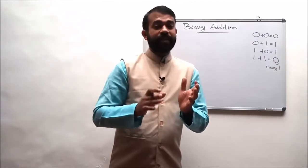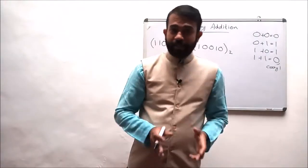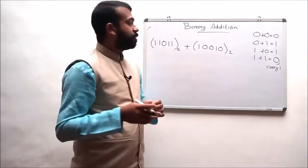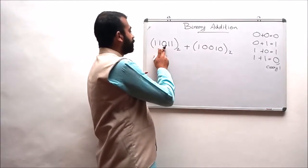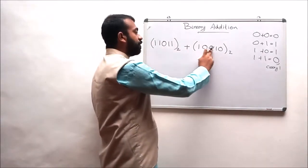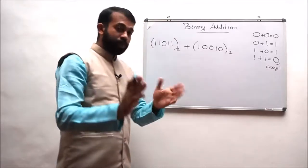The first set of examples is as follows. Our example is: add these binary numbers. The binary number is 1 1 0 1 1 to the base 2, plus 1 0 0 1 0 to the base 2.